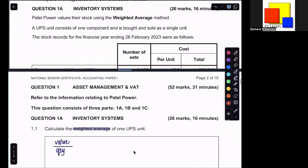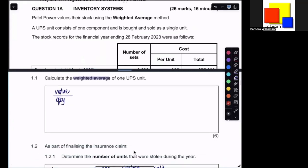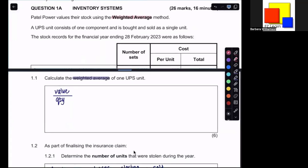Now that we know what we need to do, we can go and start using all the information. Patel Power values their stock using the weighted average method. Well, we kind of saw that already from the question that was asking us to use weighted average, and obviously that differs to FIFO. Weighted average, we're just saying what is the average price of one unit. Keep in mind that when you're working out the actual value of closing stock, you would need to go and work out the total amount that was actually lost, and we'll do that later for the claim.